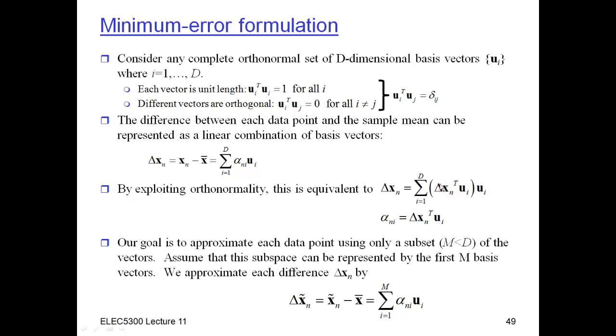And so what we'd like to be able to do is, instead of saying I want this delta X exactly, I only want to use M of these UIs to approximate the difference between the data point and its mean. And so that approximation is going to be delta X tilde, which is the difference between the approximation and the mean, which is just going to be the same sum. The only difference is that I'm going to use, instead of all D components, I'm going to use just M of the components. And so the key question here is how do I choose the UIs so that when I use just M of those, I have the smallest error?